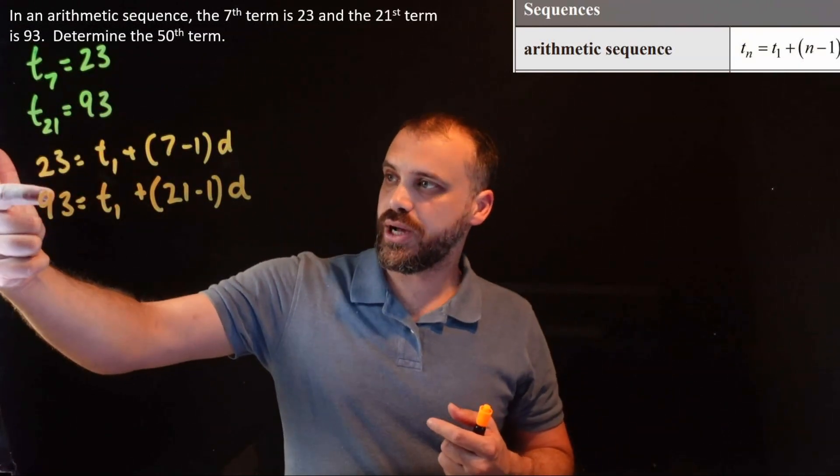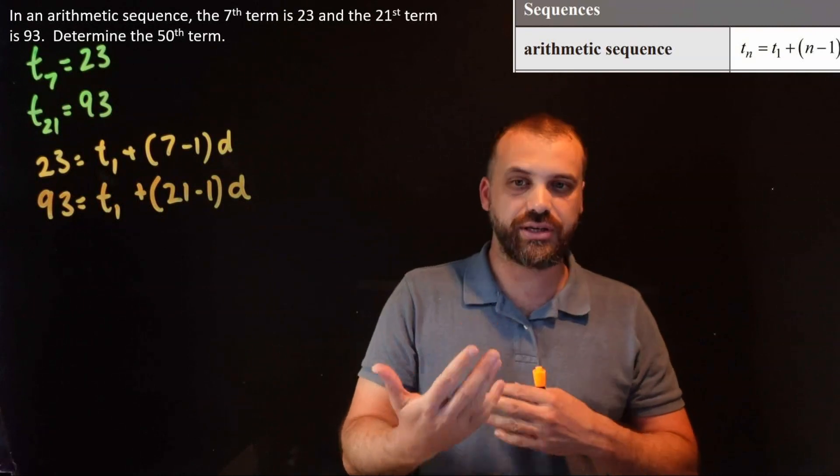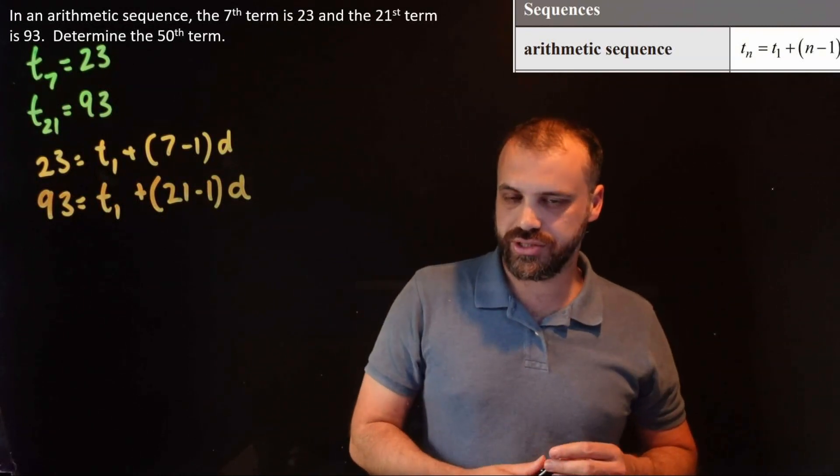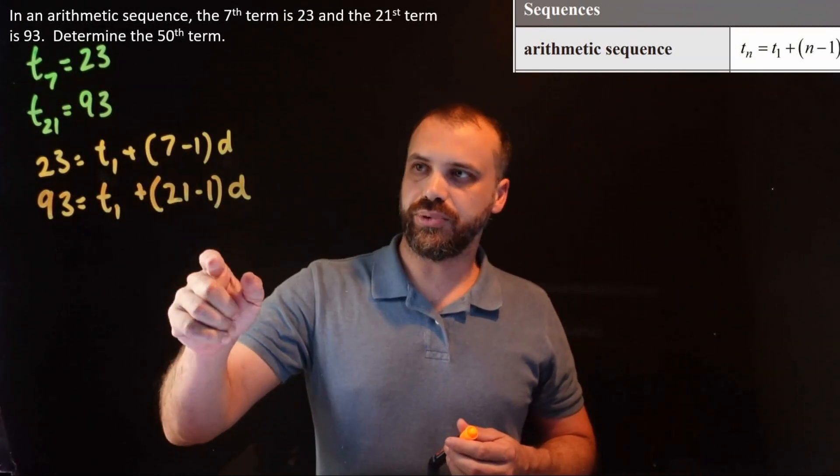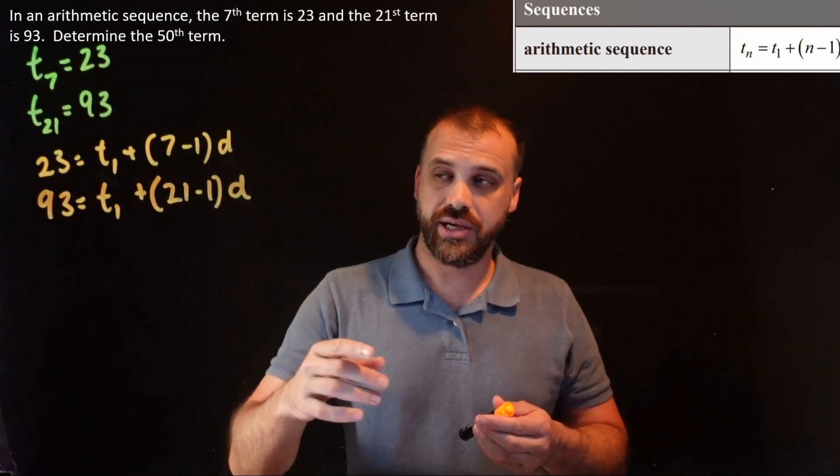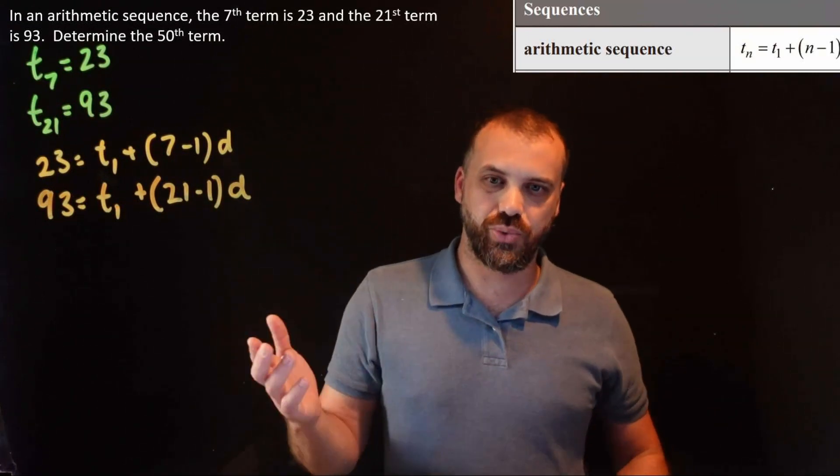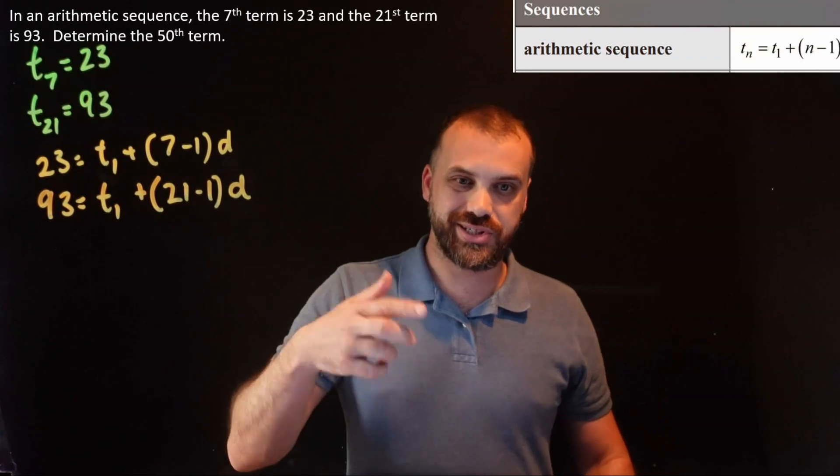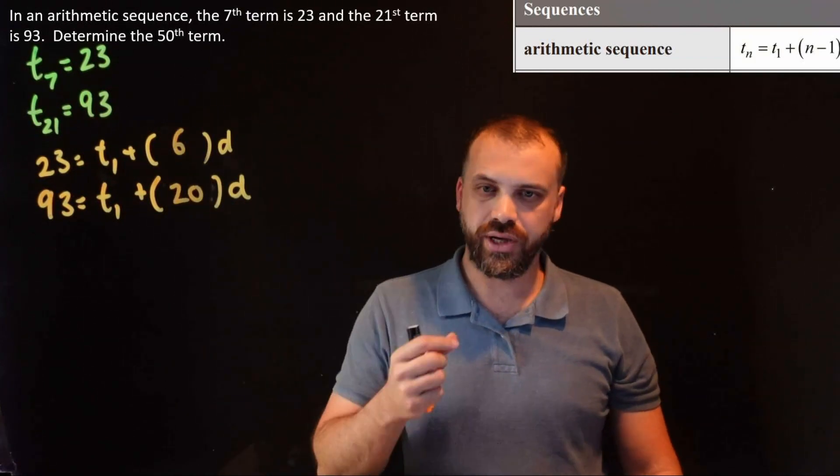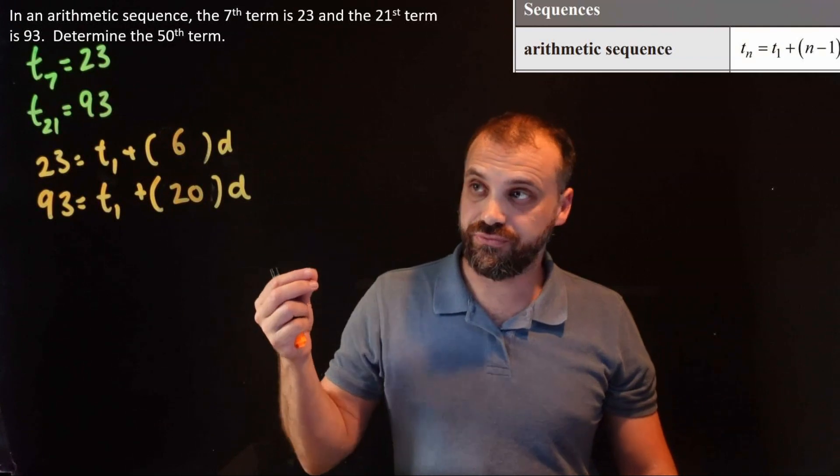So 21 minus 1 and then a common difference of d here. So what I have is two equations, two unknowns. We should be thinking about simultaneous equations. Now I can make these a little simpler because 7 minus 1 is 6 and 21 minus 1 is 20. Let's just get rid of those and put 6 and 20 in there. Simple, straightforward.